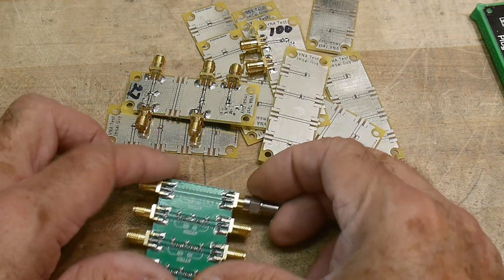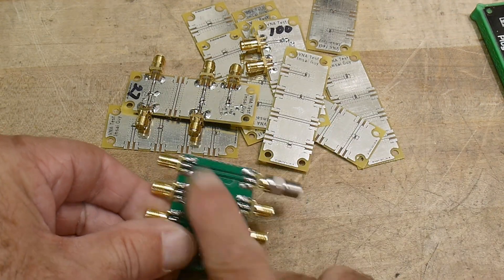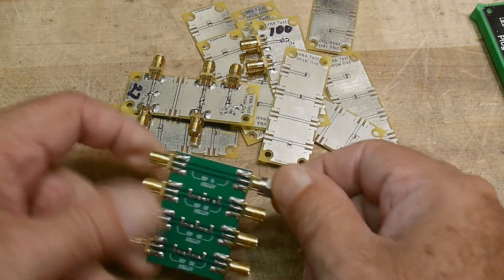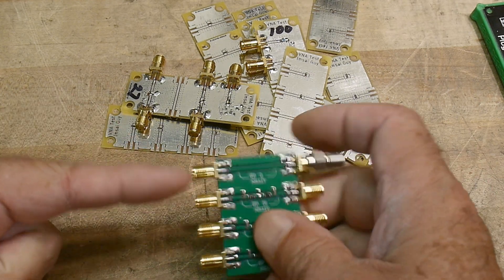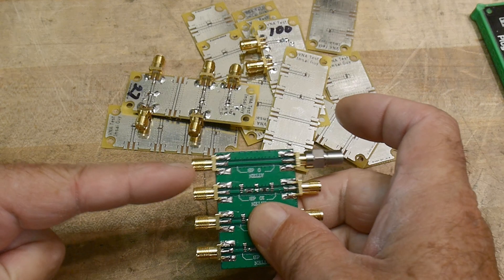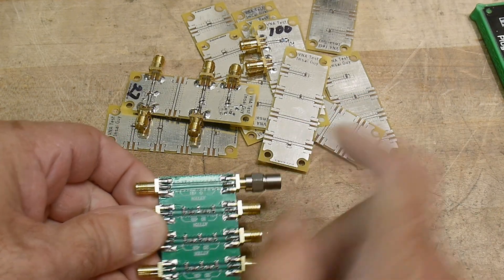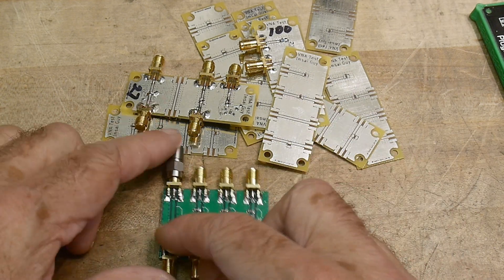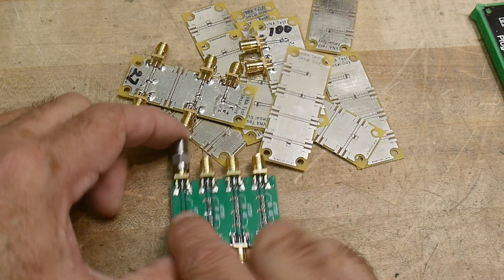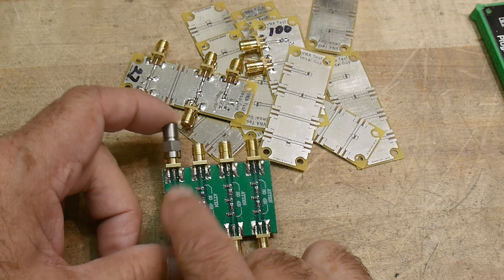We're back from the VNA. This is what I was measuring - going through the transmission line with a 50 ohm load on the other side, measuring S11. We noticed this is not a 50 ohm transmission line.